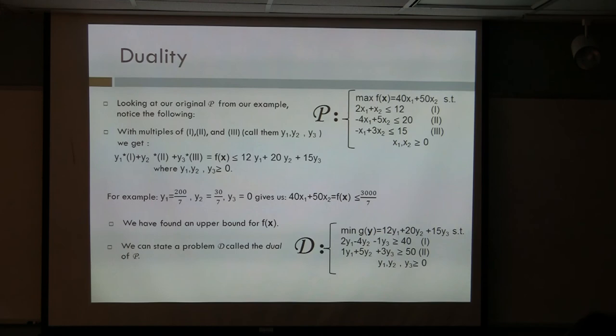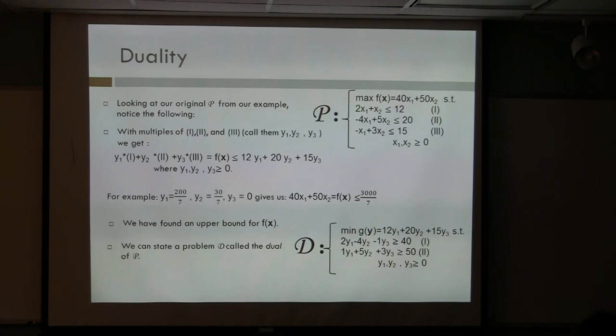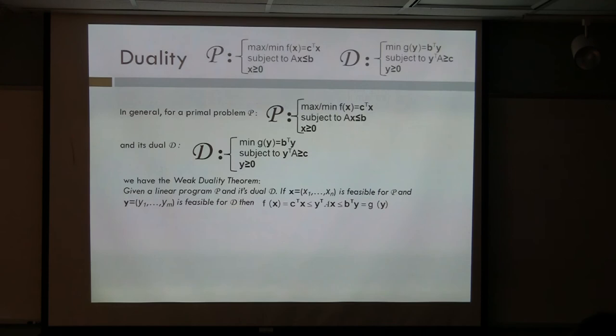What you do is you minimize — you want to minimize this upper bound on F subject to these constraints, where these are the coefficients of the original function and this is the transpose of that matrix. This is what's called the dual of the original problem.